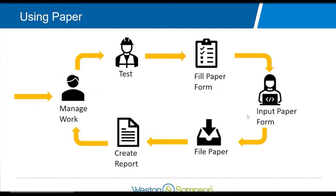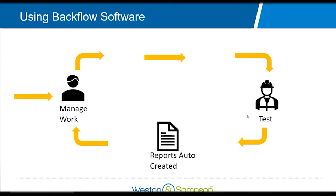A different way to do this is to use software. The work still needs to be managed — it can be done by someone in the office or by the tester. Work gets assigned to the tester or designated by zone, street, or complex. The tester tests it, data loads automatically to the system, everyone using it can see it, and reports are auto-created. Quite a few steps are removed — it's a lot easier, faster, and more accurate.